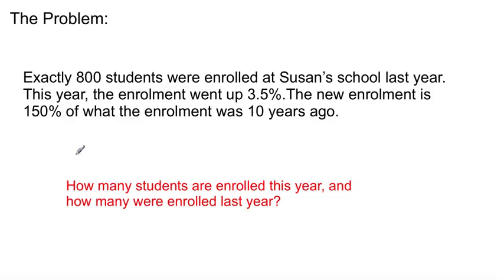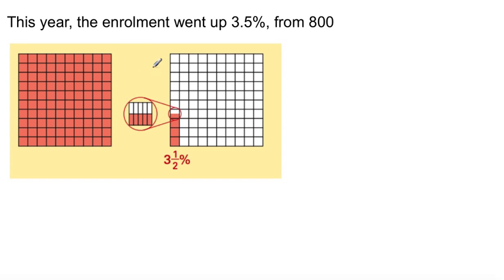First question is, how many students were enrolled this year and how many enrolled last year? Let's look at 800 square. There's 100 squares, take my word for it. Pause and count it if you want. Which represents 800.